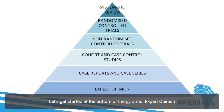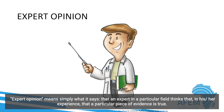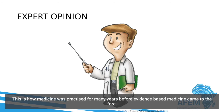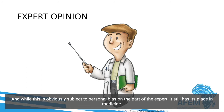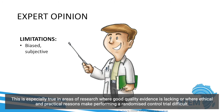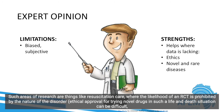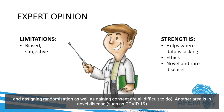Let's get started at the bottom of the pyramid: expert opinion. Expert opinion means simply what it says — that an expert in a particular field thinks that, in his or her experience, a particular piece of evidence is true. This is how medicine was practiced for many years before evidence-based medicine came to the fore. While this is obviously subject to personal bias on the part of the expert, it still has its place in medicine, especially in areas where good quality evidence is lacking, or where ethical and practical reasons make performing a randomized controlled trial difficult — such as in resuscitation care, where assigning randomization and gaining consent are all difficult to do.